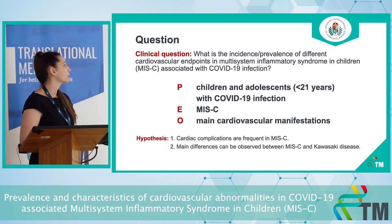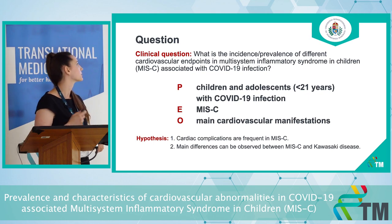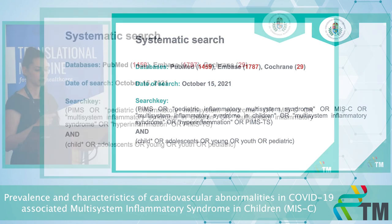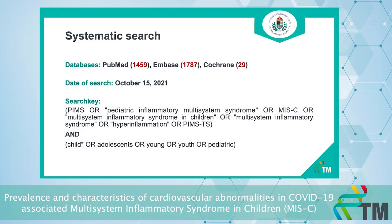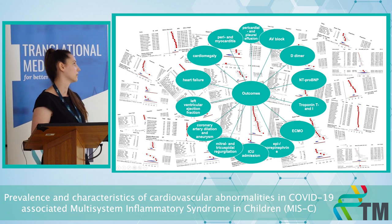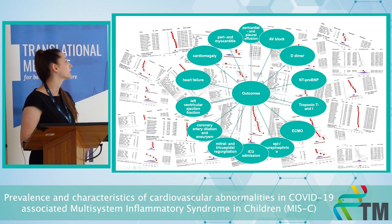To answer our question, we focused on the main cardiovascular manifestations and determined their prevalences. We conducted a systematic search with this search key study in three different databases and obtained an overall 113 eligible full texts. We have a huge number of outcomes; today I would like to present the three most important ones, including laboratory findings, intensive therapeutic needs, and also radiographical abnormalities.